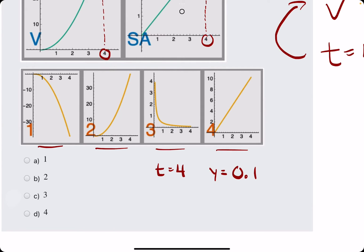So we look at 4 on each of these graphs, and we're looking for the Y value of 0.1. So on this first graph, the Y value is close to negative 40. So that can't be it. On graph 2, we look at 4, and the Y value is close to 40. So that can't be it, right?